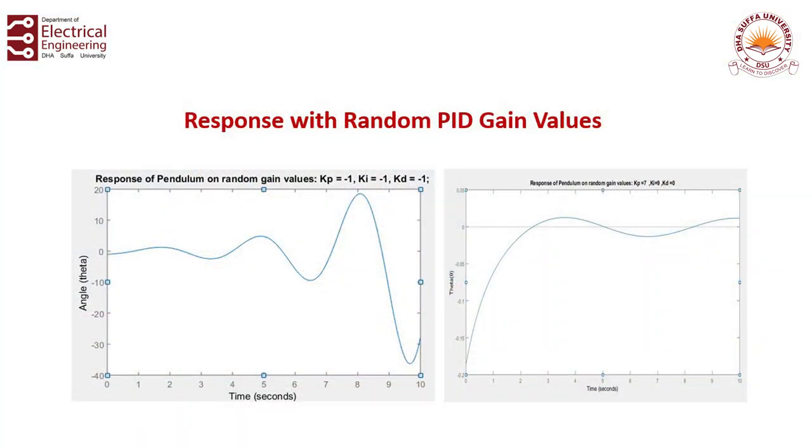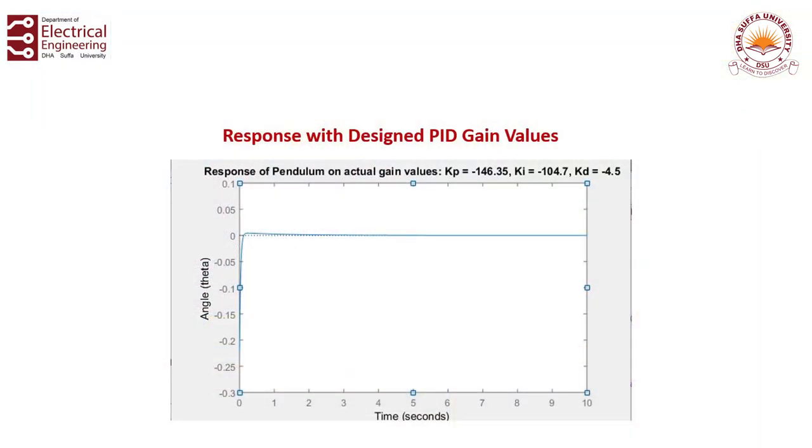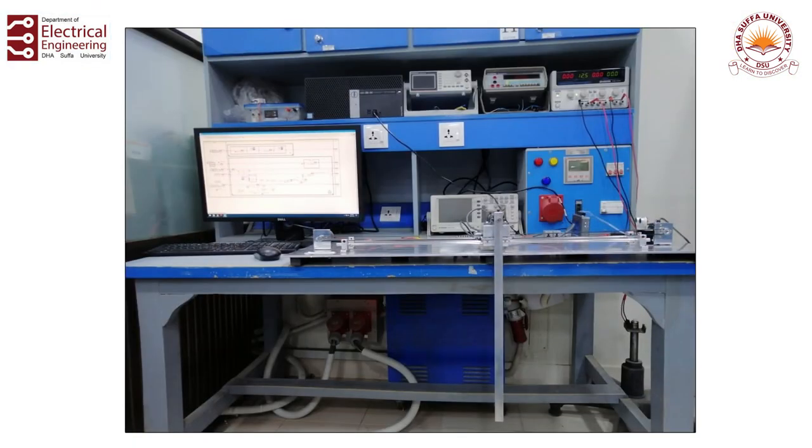If you have a look, when the system is without the control parameters, the system is unstable — you can see that the states are not approaching zero. And once the PID parameters have been fed into the system, the system is stabilized and you can see the trajectory is going to zero. So after modeling and analysis, the next step is to apply practical control on this practical system.